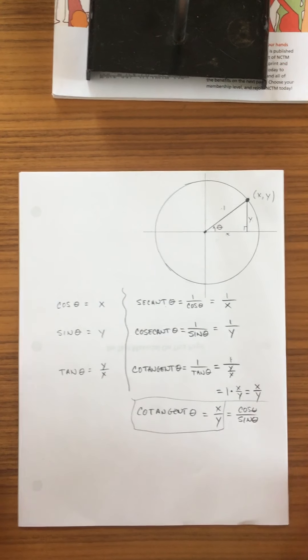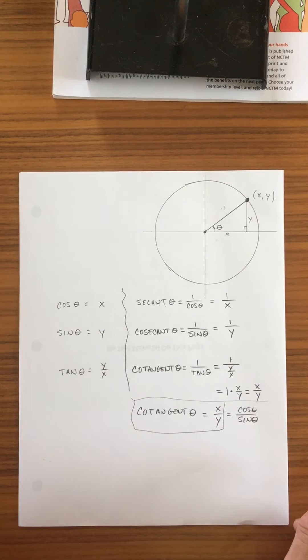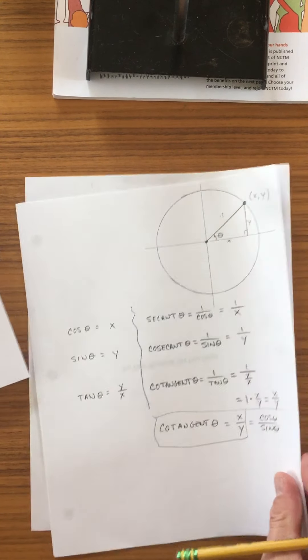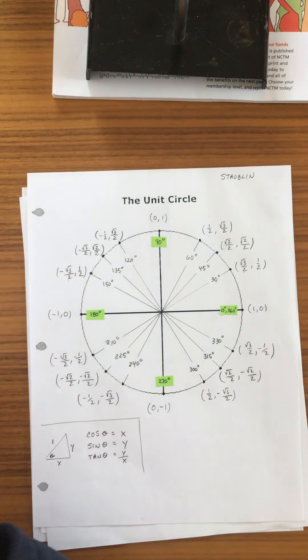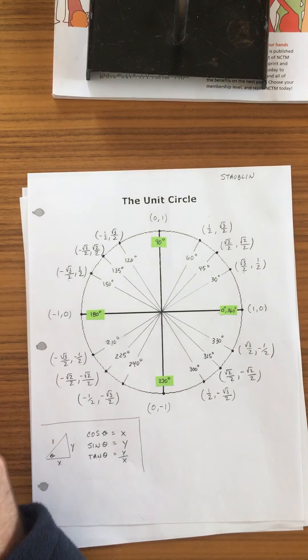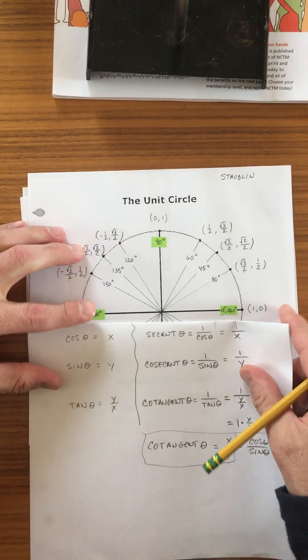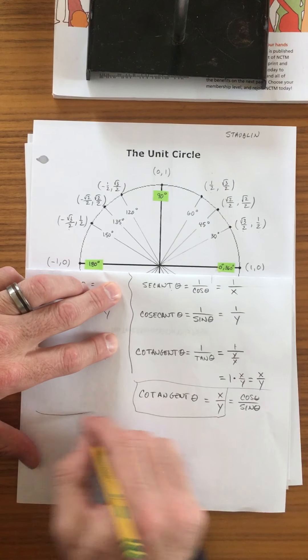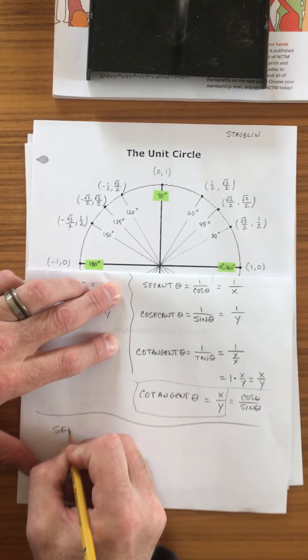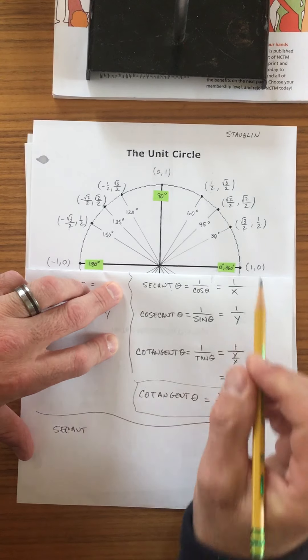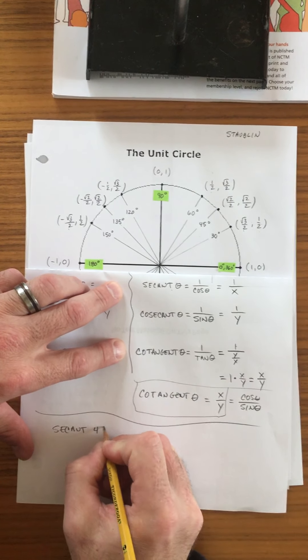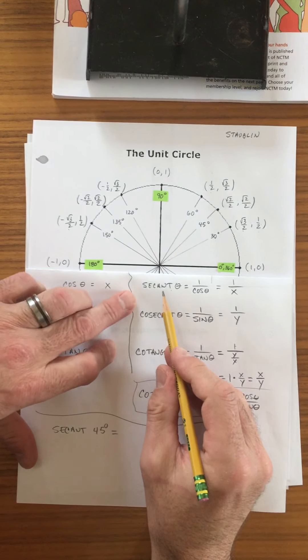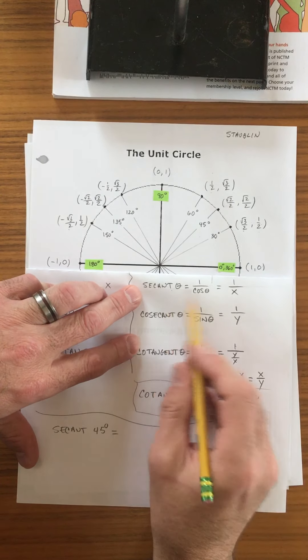Okay, so let's look at our unit circle real quick. And we'll do an example. Let's say that we wanted to calculate the secant of 45 degrees. Okay, well, the secant is 1 over x.